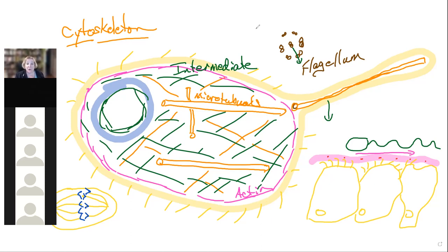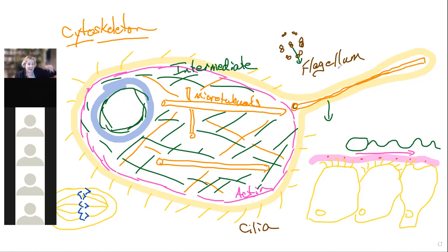Cilia can either move the cell — as in some protozoa — or move things past a group of cells in a multicellular organism. Flagella are long; cilia are short. Bacterial flagella differ from eukaryotic flagella: bacterial flagella spin 360 degrees like a little outboard motor, whereas eukaryotic flagella go back and forth in a wave-like motion.